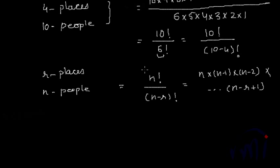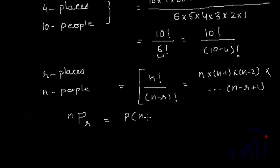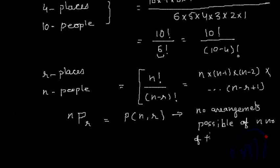This is what we call permutation. In permutation, the order of things — the way in which you arrange them — is important. It is represented as nPr, or as 'permutation of n objects for r places.' nPr represents the number of arrangements possible of n things for r places.